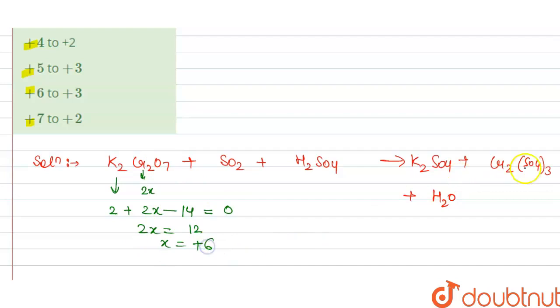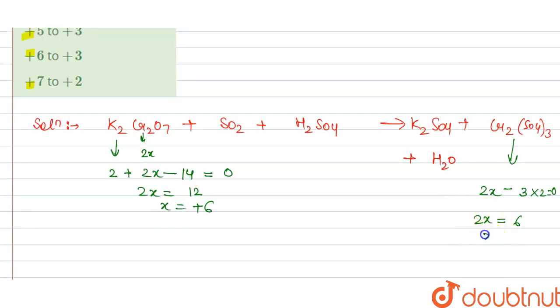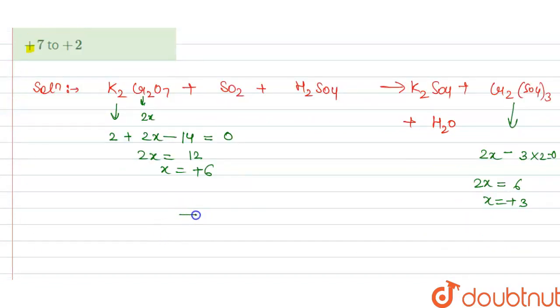And in this Cr2(SO4)3, we have chromium is 2x, SO4 is -2, so this is -3 multiplied by 2, which equals 0. So x is +6 here and x is equal to +3, so it will change from +6 to +3.